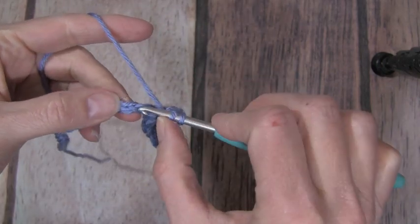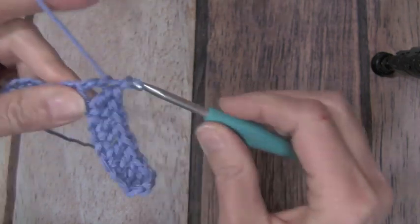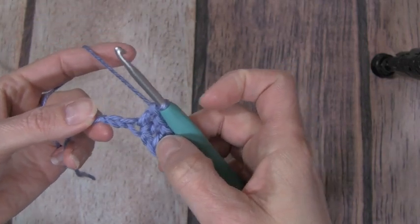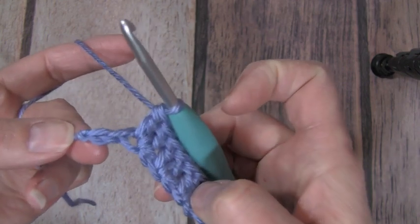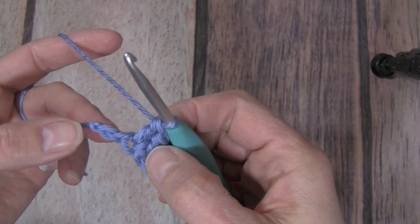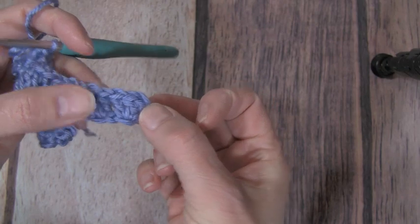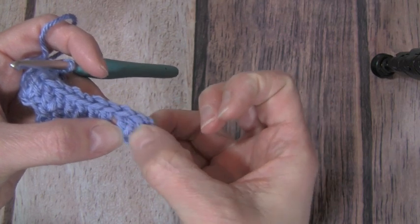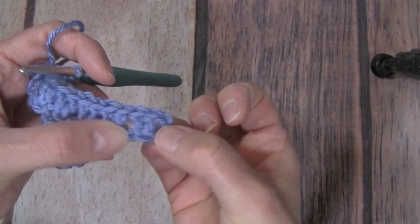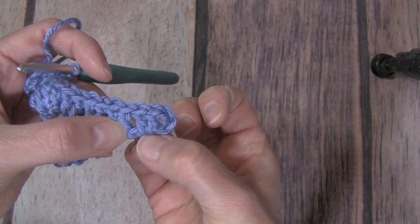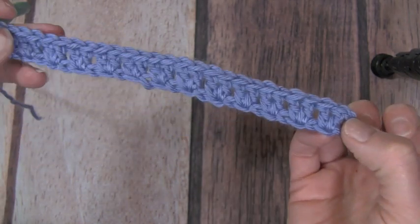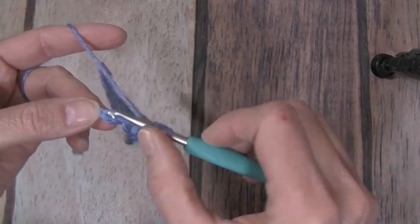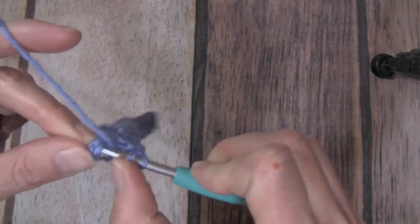You can see here that I have reached close to the end here of my chain. I have two chains left. Instead of doing two double crochets, remember at the beginning of this row or this chain here at the beginning, those would count as your first double crochet, those skipped chains at the beginning, and then we did two double crochets in the fourth chain from the hook. We want our row to match on either side, so I'm going to skip that chain and I'm going to do one double crochet in that last chain.